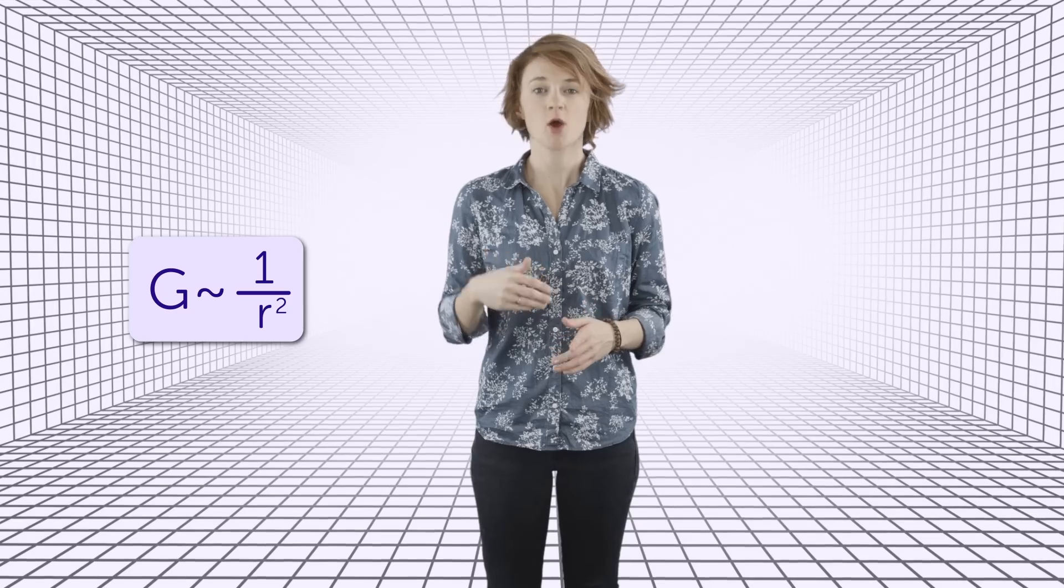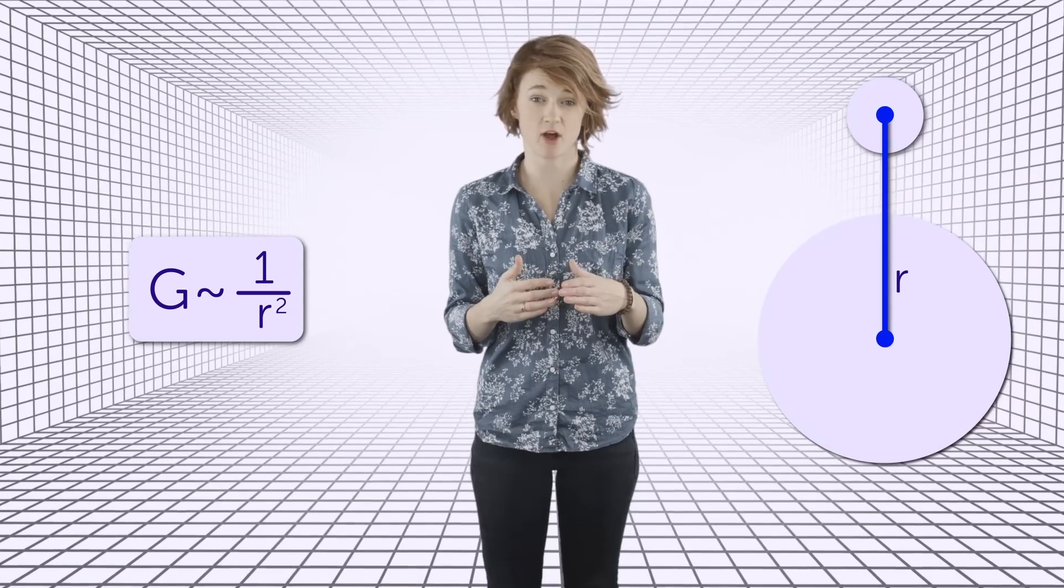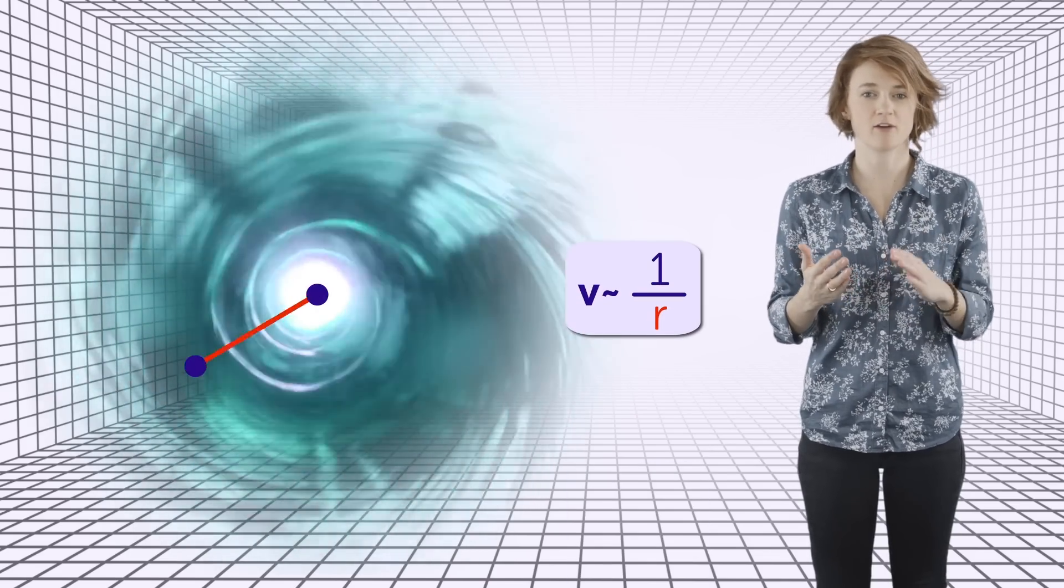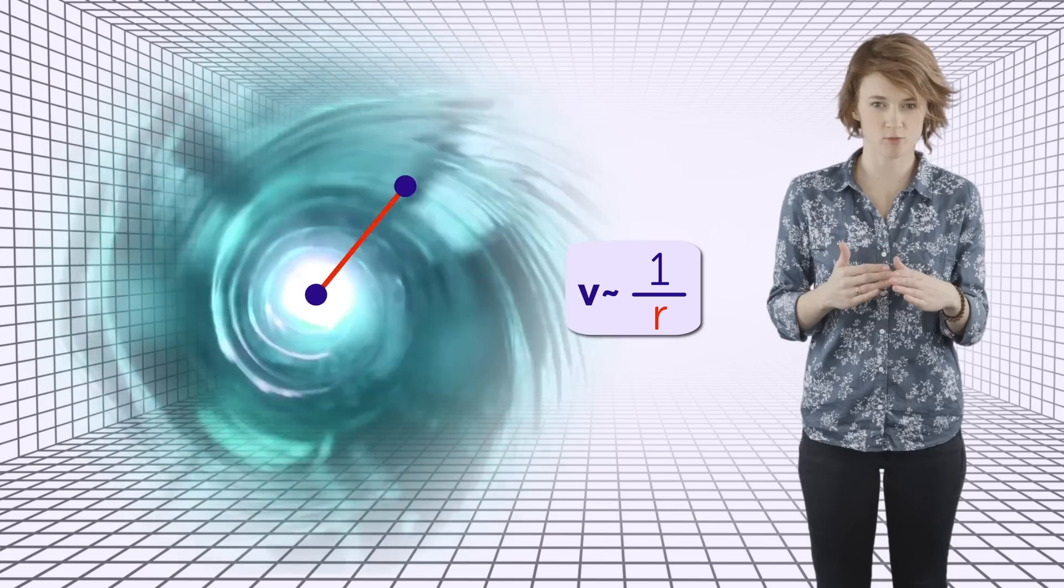So Matt mentioned that the force of gravity is proportional to 1 over r squared, where r is the distance between the center of the massive object, like the center of Earth, and the object being pulled toward it, like you. A similar situation holds for vortices. The velocity of water spinning in a whirlpool is proportional to 1 over r, where r is the distance of the water to the center of the whirlpool.